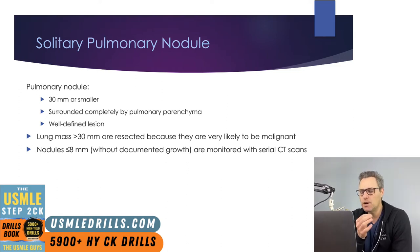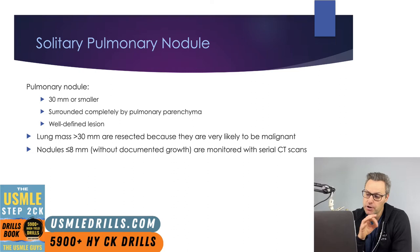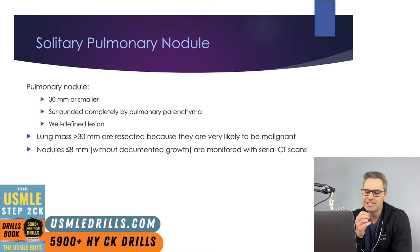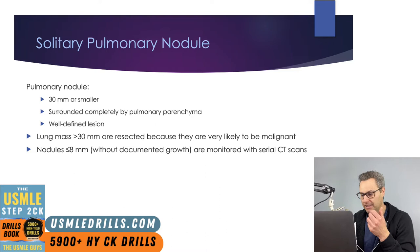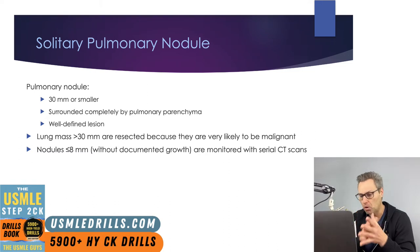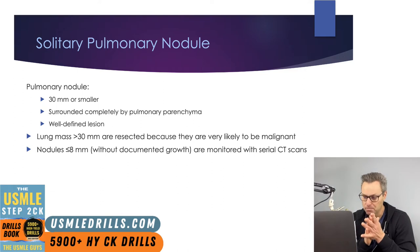If a nodule is less than or equal to 8 millimeters without any documented history of growth, you will monitor this with serial CT scans because the risk of malignancy is relatively low. However, if the lesion is above 30 millimeters, it's going to be resected because it is very highly likely to be malignant. In the 8 to 30 millimeter range, there's wide variability regarding the likelihood of malignancy, based on several characteristics that impact the probability that a solitary pulmonary nodule is malignant.